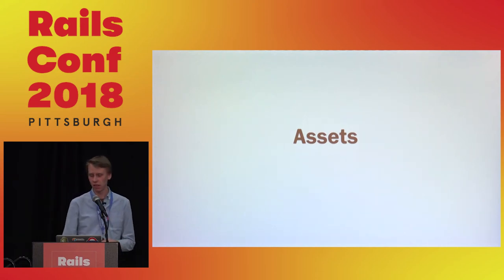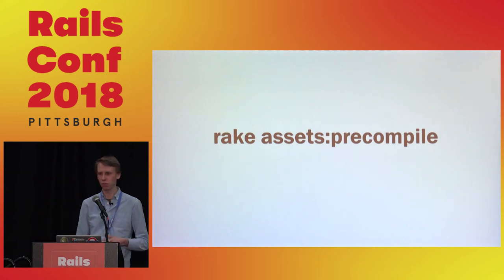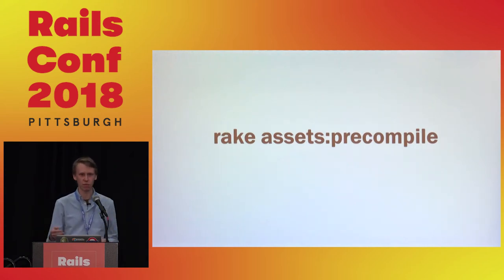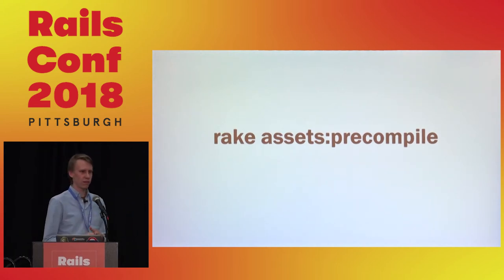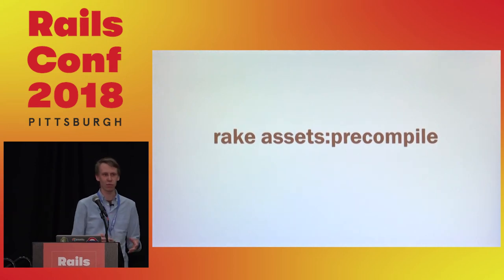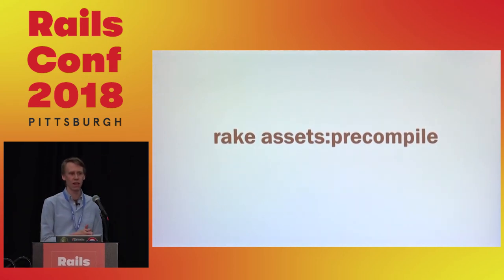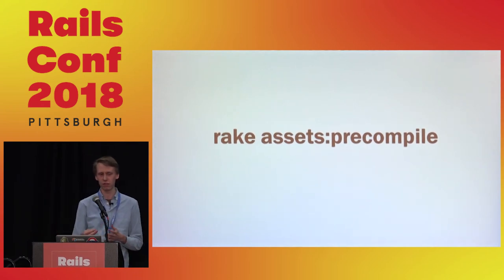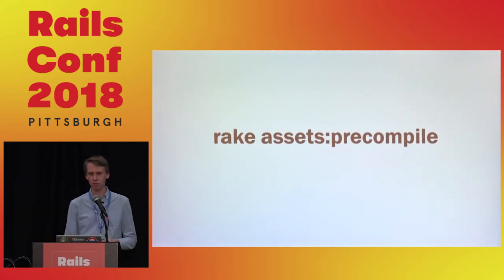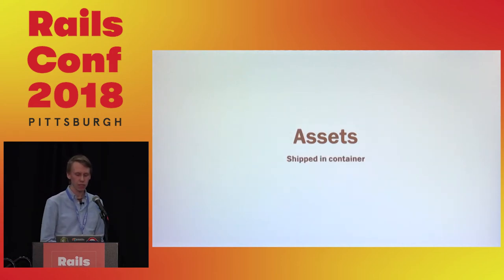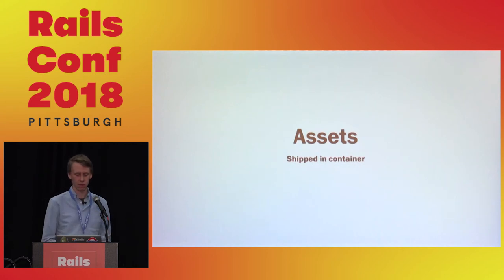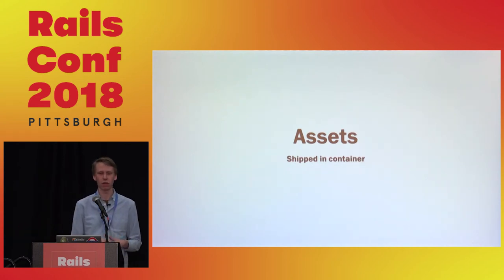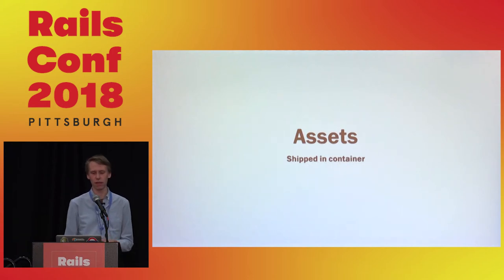Some things to know about Rails when deploying it to Kubernetes. First is assets. When you used something like Capistrano, it would probably run assets:precompile on every server you wanted to serve requests from, which was a bit of a waste of resources. If you can pre-compile assets only once and then distribute that image to all servers, that's more efficient. The efficient way of doing that is to embed assets into the container with the app, so that when the app starts, it already has all the dependencies like assets.